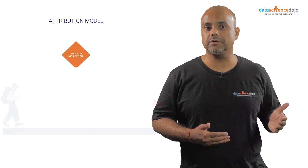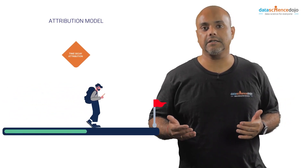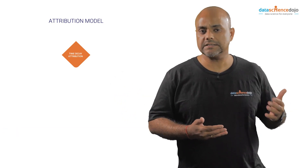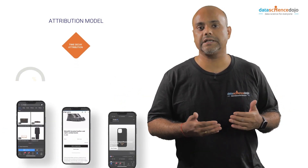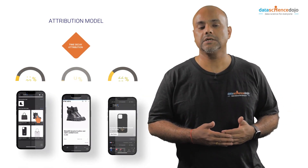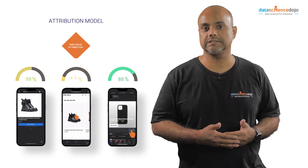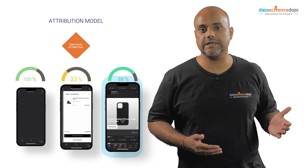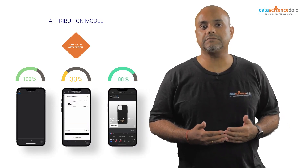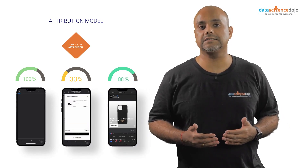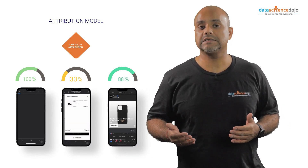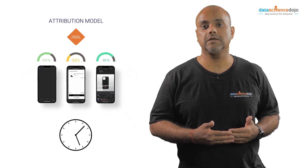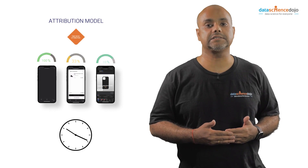In time-decay attribution, credit is assigned based on the proximity of time to the conversion. This is accomplished by assigning a weighted percentage to the most recent touch points, so the clicks closest to the conversion get the most credit. This model works best when the buying cycle is relatively short, as it assumes touch points closest to the time of sale were most important in the final decision.